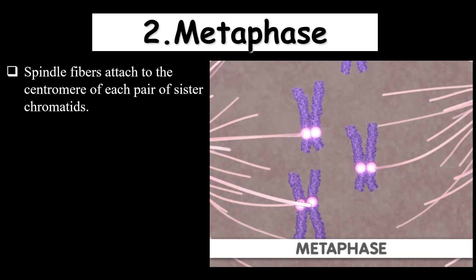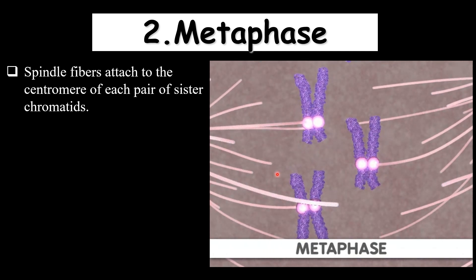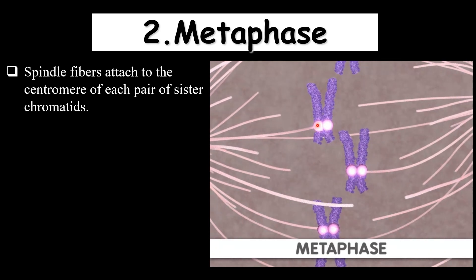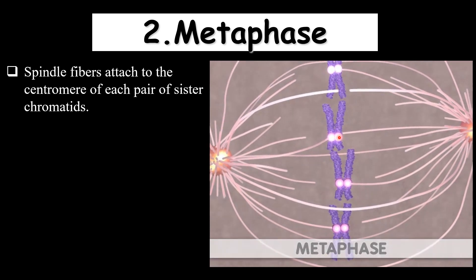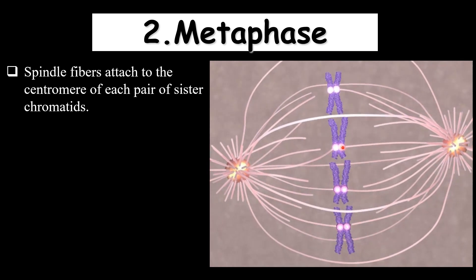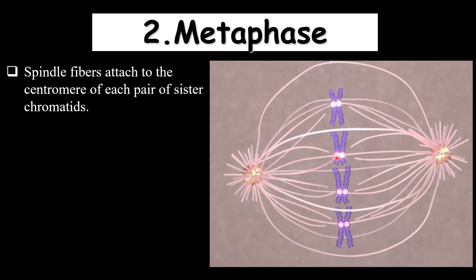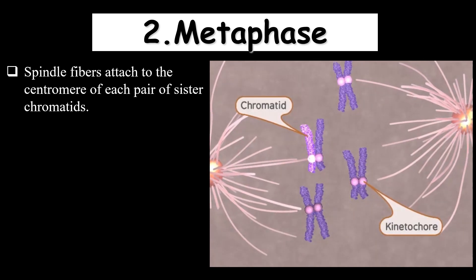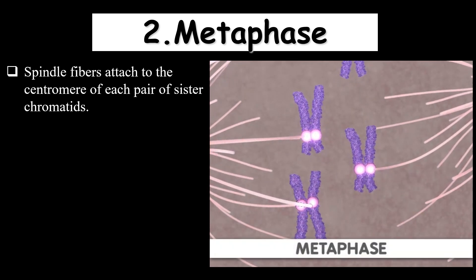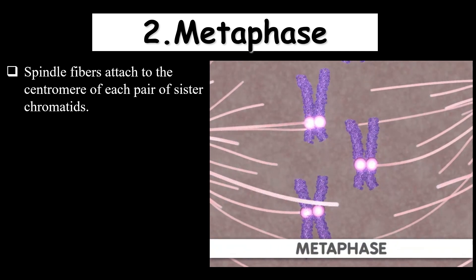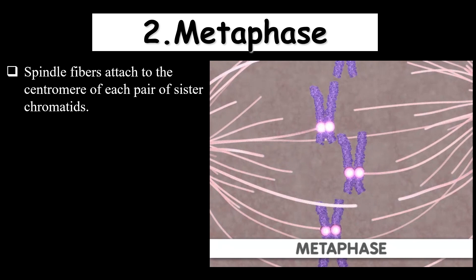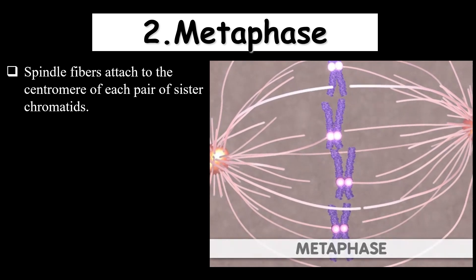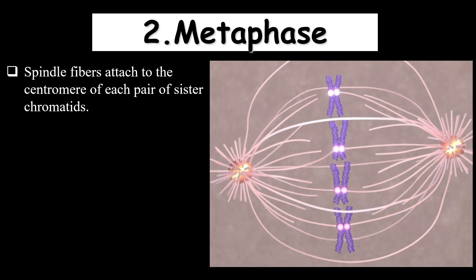Prophase is followed by metaphase. In metaphase, the spindle fibers attached to the centromere of the chromosome through the kinetochore are known as kinetochore fibers. One spindle fiber attaches from one pole to one sister chromatid's kinetochore, and the other spindle fiber from the other pole attaches to the other chromatid's kinetochore. There are also other spindle fibers that are unattached, known as cytoplasmic spindle fibers, which are involved in the elongation of the cytoplasm after metaphase.